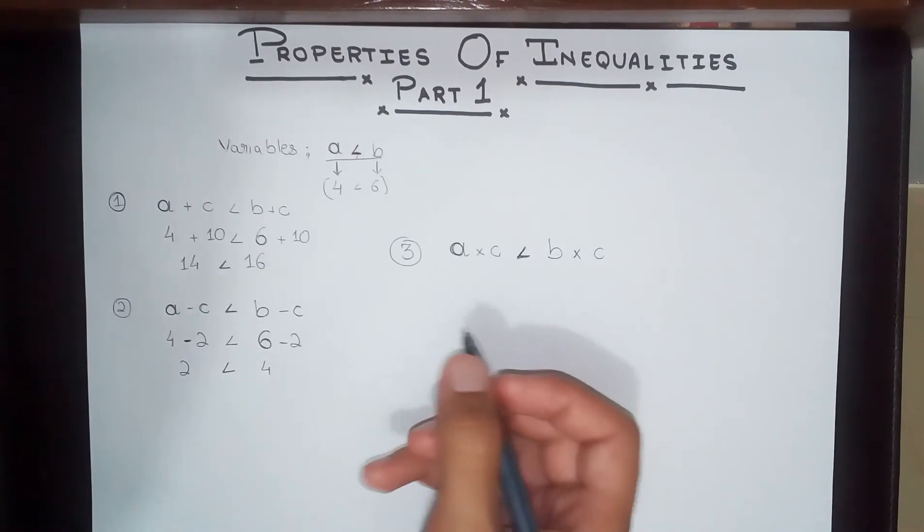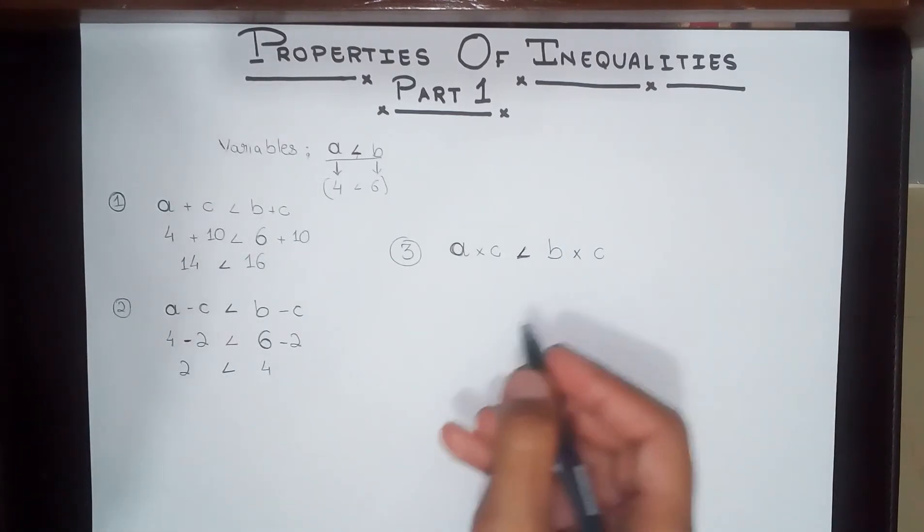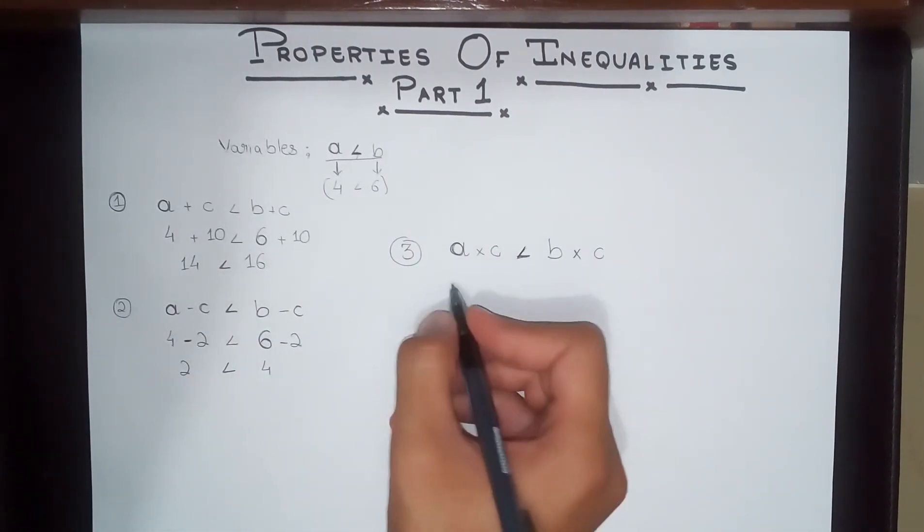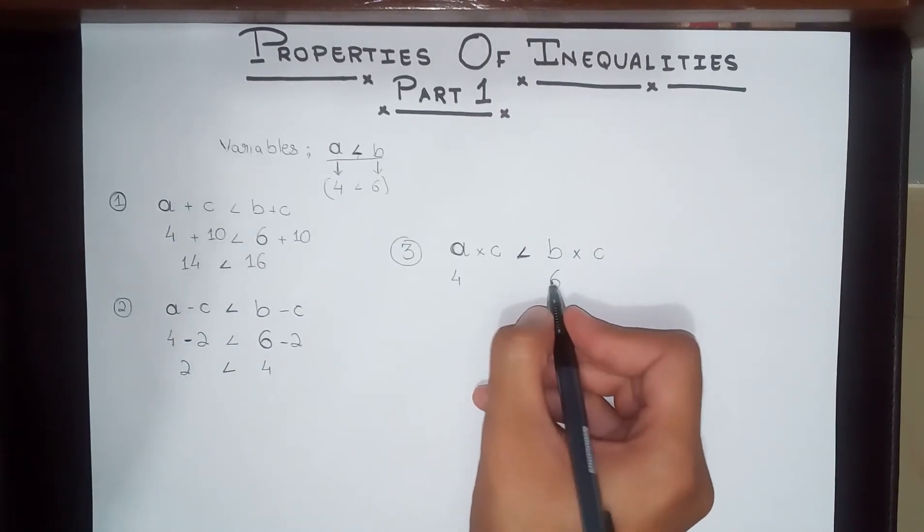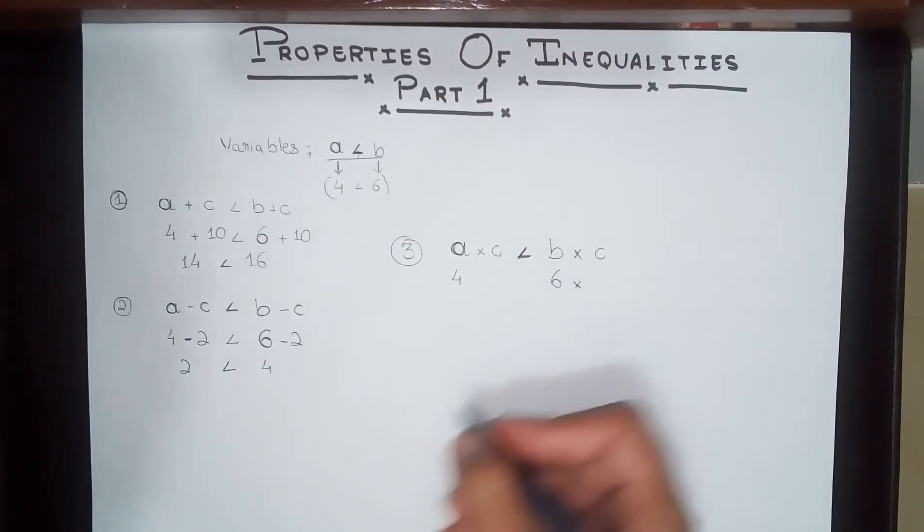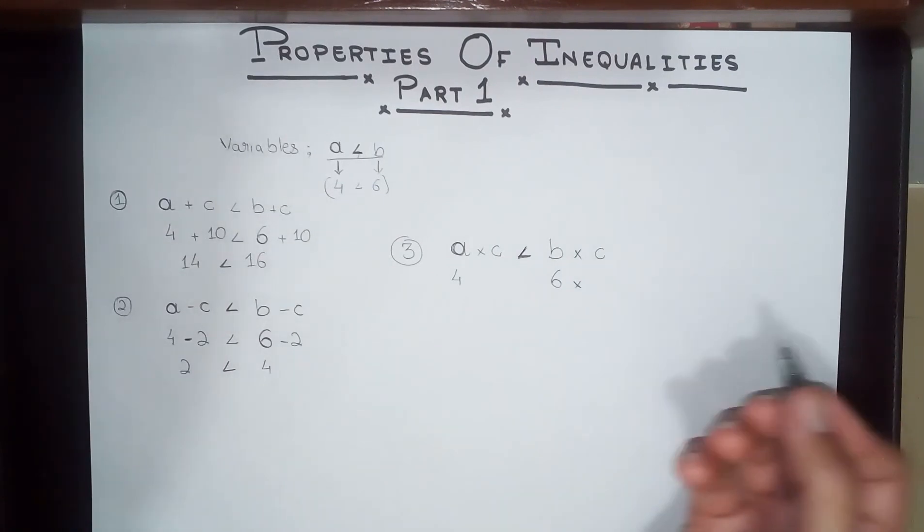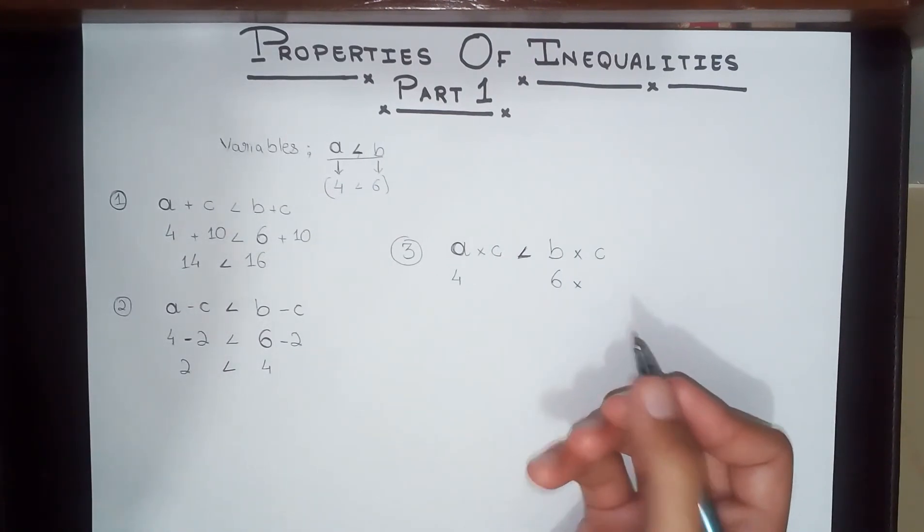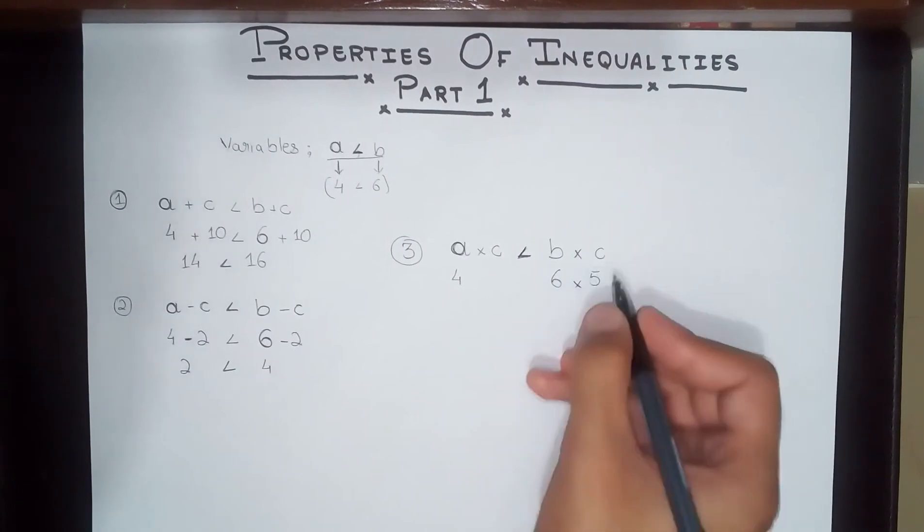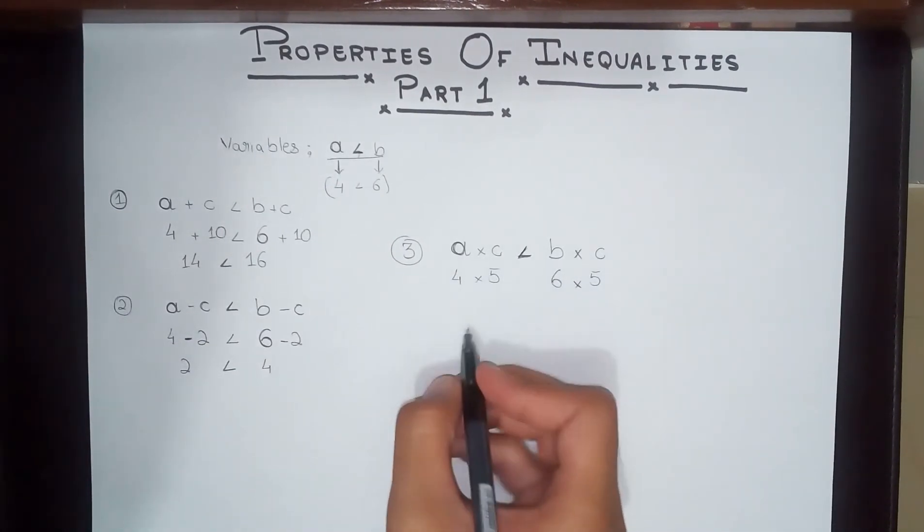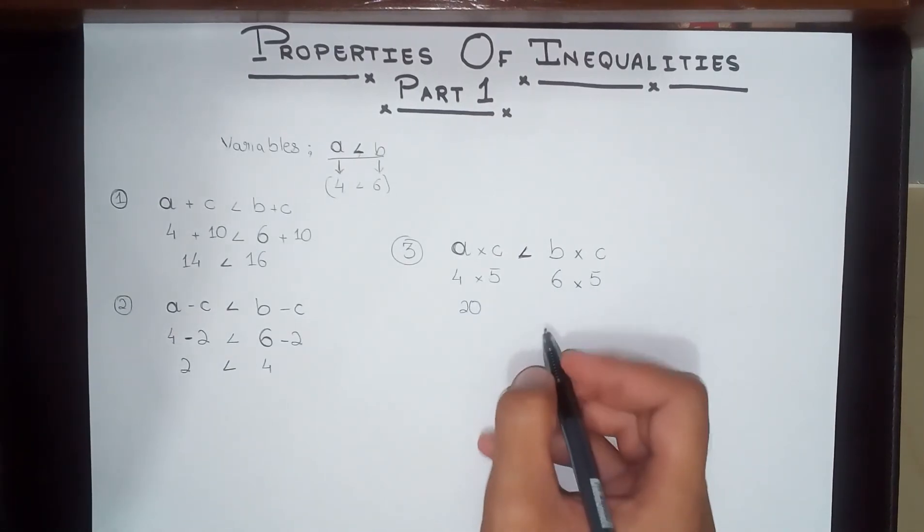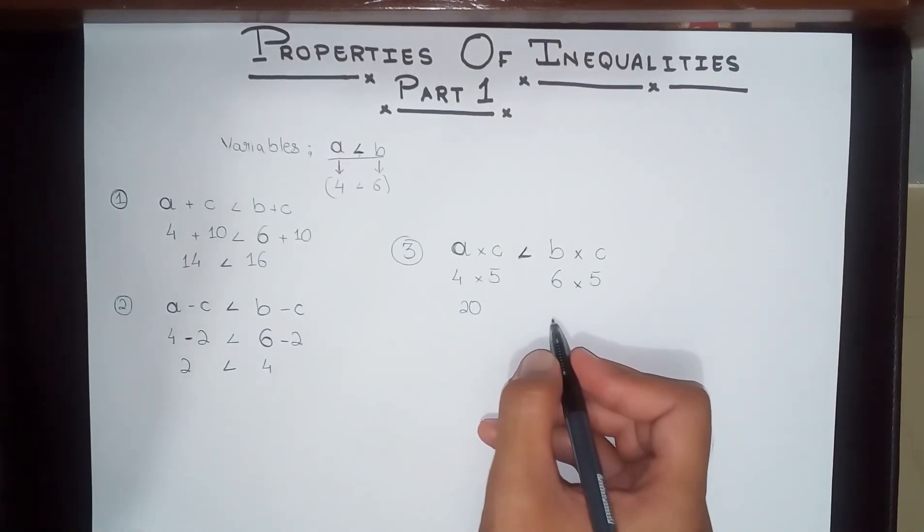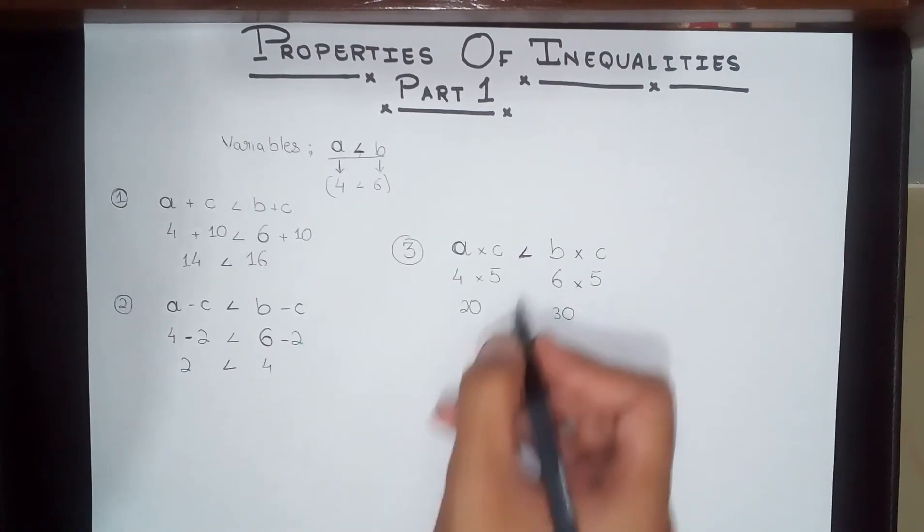Let's get some definite proof. We have four and we have six. We multiply with any number. Let's say five. Five times four equals twenty, and five times six equals thirty. As you can see, thirty is bigger than twenty.